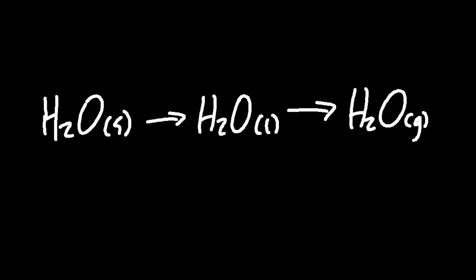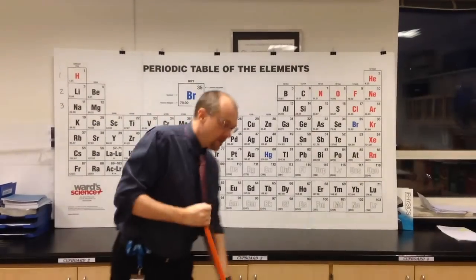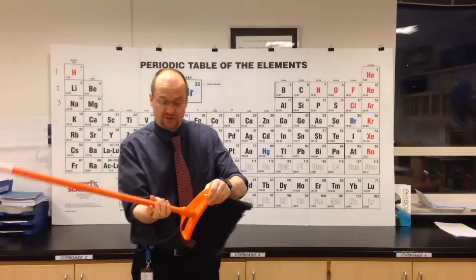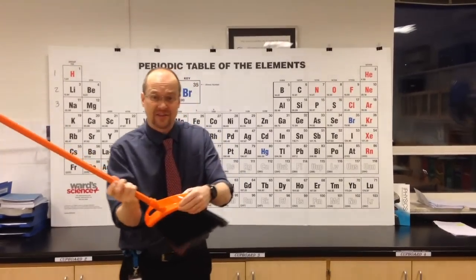So the small s, l and g in parentheses are three of the four state symbols that you need to know, at least in SL. So the periodic table has solids, liquids and gases in it.